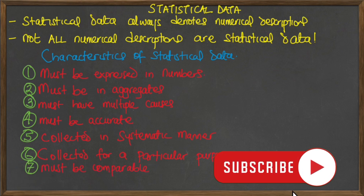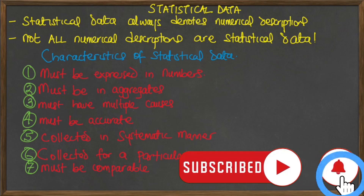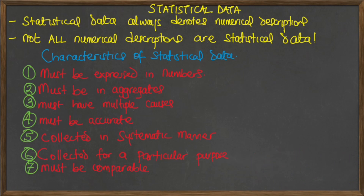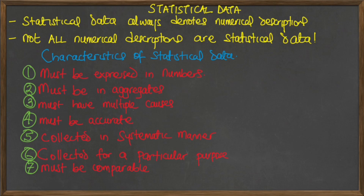The seventh characteristic is that statistics must be capable of being placed in relation to each other — they must be comparable. For example, the number of deaths due to malaria for different years constitutes statistics because you can compare one year to another. But the height of a student and their IQ do not constitute statistics as you cannot compare these two things. Numerical data should be comparable, and to make valid comparisons, the data is expected to be homogeneous and uniform.